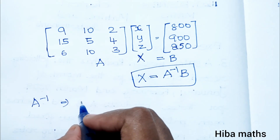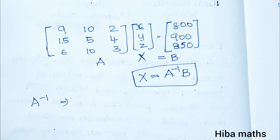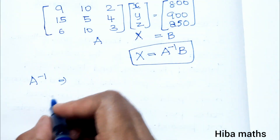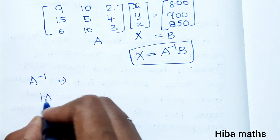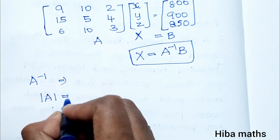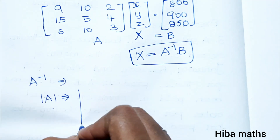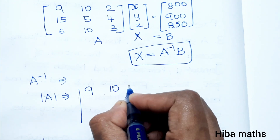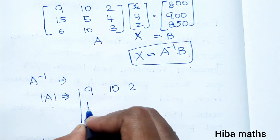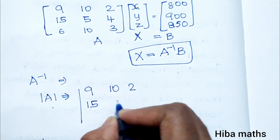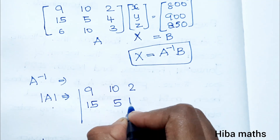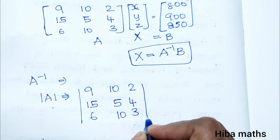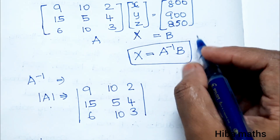First, we must find the modulus of A. The matrix A is: row 1: 9, 10, 2; row 2: 15, 5, 4; row 3: 6, 10, 3. Now we compute the determinant step by step.